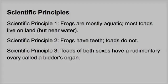Here are the scientific principles we're going to use. Scientific principle number one: frogs are mostly aquatic; most toads live on land. Scientific principle number two: frogs have teeth; toads do not. Scientific principle number three: toads of both sexes have a rudimentary ovary called a Bidder's organ.